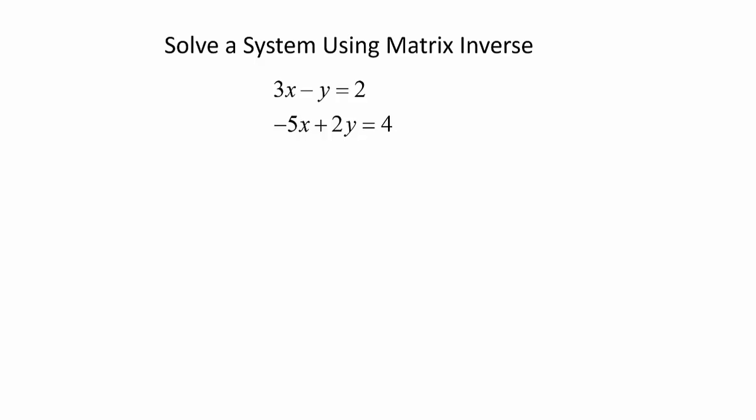Consider the system 3x minus y equals 2, and negative 5x plus 2y equals 4.